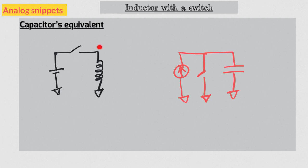We said there will be a parasitic capacitor in parallel with the inductor and this parasitic capacitor will help in smoothen out the voltage ramp. In capacitor case there will be a parasitic inductance in series with the capacitor and it will smoothen out the current ramp.